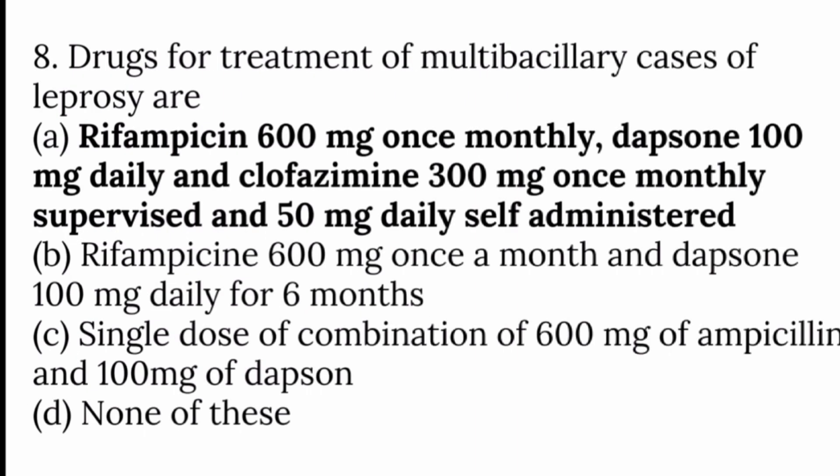Drugs for treatment of multibacillary cases of leprosy: the answer is rifampicin 600 mg once monthly, dapsone 100 mg daily, and clofazimine 300 mg once monthly supervised and 50 mg daily self-administered. So the answer is option A.